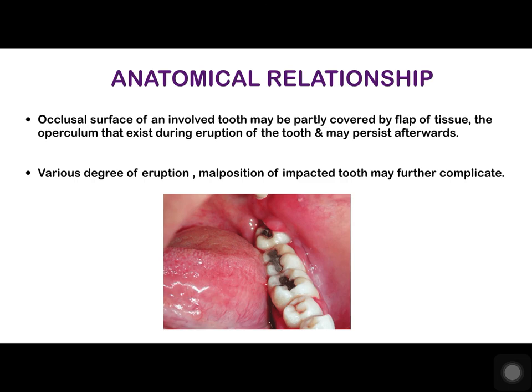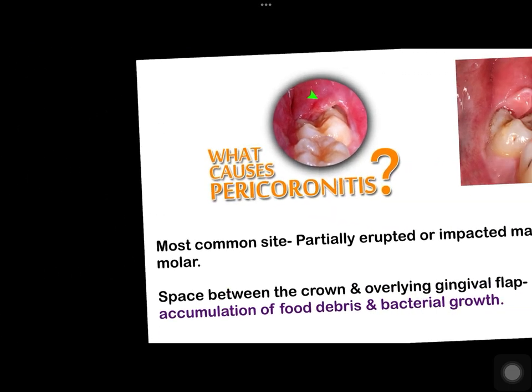Regarding anatomical relationship, the occlusal surface of the involved tooth may be partly covered by a flap of tissue called the operculum, which exists during eruption of the tooth and may persist afterwards. Various degrees of eruption and molar position of the impacted tooth may further complicate the pericoronitis condition.